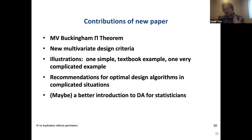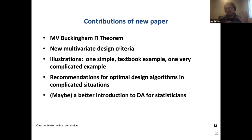The paper also provides recommendations for optimal design algorithms in complicated situations and addresses cases where the multivariate Buckingham Pi theorem conditions no longer hold. For instance, if the Ipsen procedure cannot remove physical dimensions from some responses, other responses may be used to help. The authors believe they have provided a better introduction to DA for statisticians, and the Mars Rover example is a compelling demonstration.